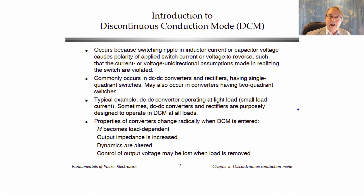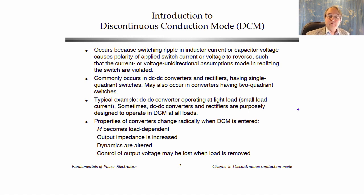All of a sudden we have a high output impedance. It turns out that the dynamics of the converter, which we'll discuss in several weeks, change very substantially — and in fact they're simpler in discontinuous mode. However, when you remove the load, the discontinuous mode causes the output voltage to become uncontrollable and it can cause problems, so we have to account for that.